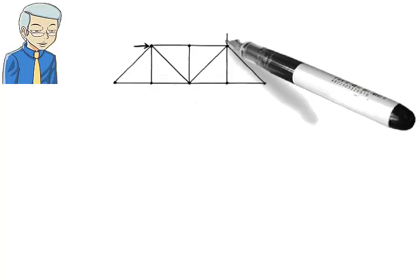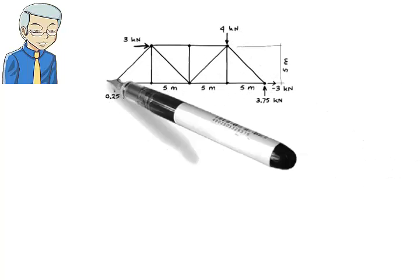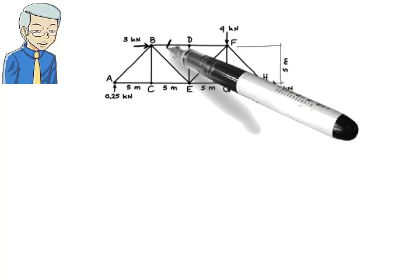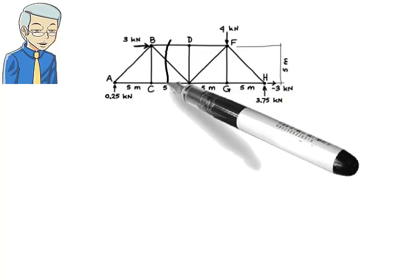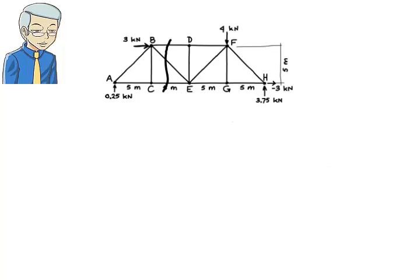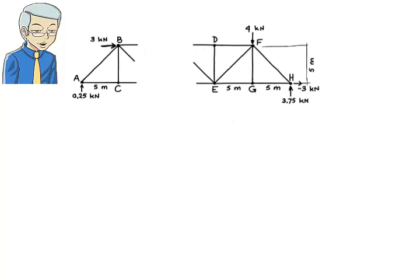Now, to find the force in member BD, we need to cut the structure through the member. The most suitable cut here is one that passes through members BD, BE and CE. Since the cut goes through BD and CE, we can calculate both member forces using the same set of equations. When we cut a truss into two parts, we must show the internal axial force in each cut member in the free body diagram. Since we have cut through members BD, BE and CE, we need to show the axial force for each of these members in both the left and the right substructures.